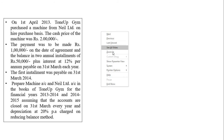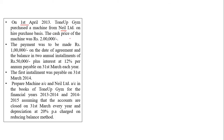The very first question is on 1st April 2013. Tone-up Jim purchases a machine from Neil on hire purchase basis. The cash price of the machine was 2 lakhs. The payment was to be made: rupees 1 lakh on the date of agreement, and the balance in installments of 50,000 plus interest at 12% per annum, payable on 31st March each year. The first installment was made on 31st March 2014. Prepare machinery and Neil account in the books of Tone-up Jim for financial years 2013-14 and 2014-15, assuming accounts are closed every year on 31st March. Depreciation is charged at 20% on reducing balance method.